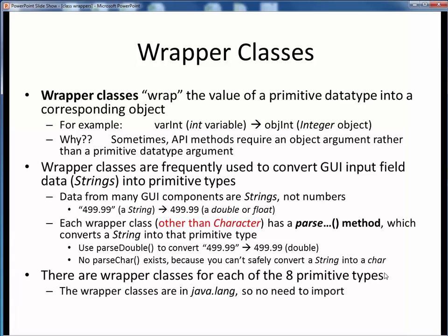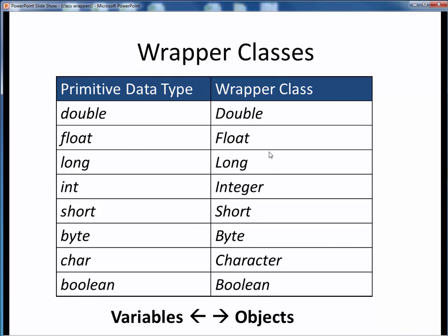There are dedicated wrapper classes for each of the eight primitive data types, and these wrapper classes are all part of the Java.lang package, so there is no need to explicitly import them to use them. Here are the eight wrapper classes in Java — for each of the eight primitive data types on the left, there is a corresponding, similarly named wrapper class. We know these are classes by their initial capital naming convention. The Integer and Character classes are the only naming exceptions, but they should all be pretty obvious.